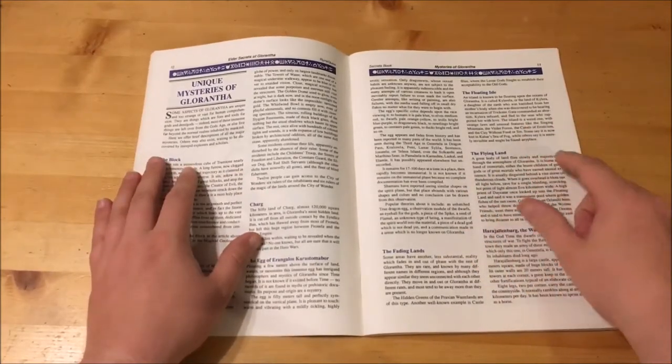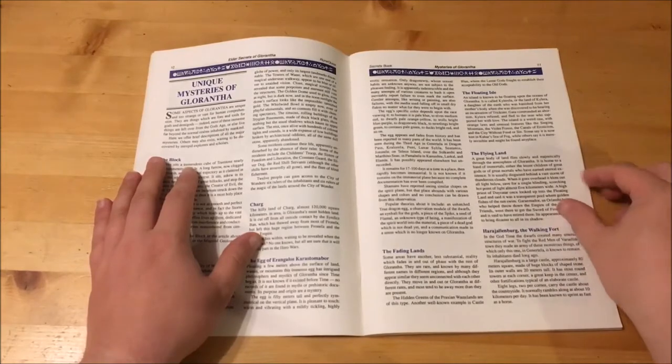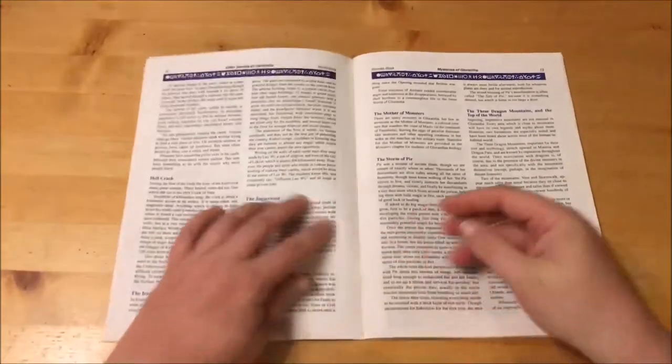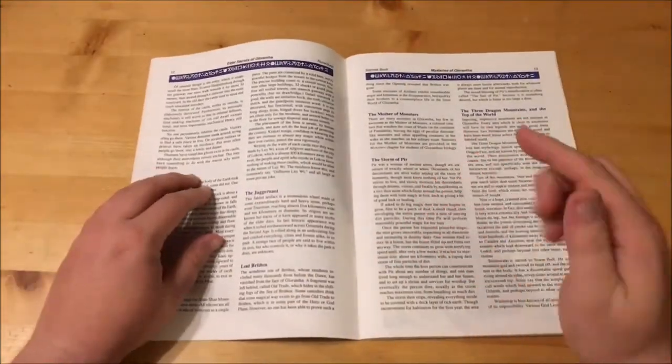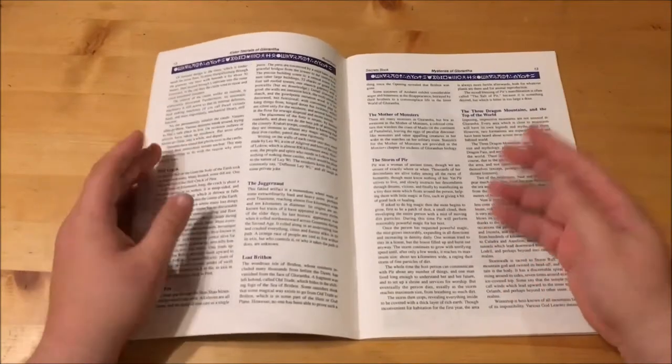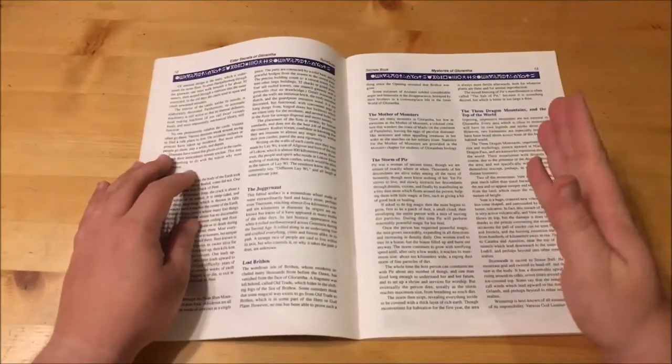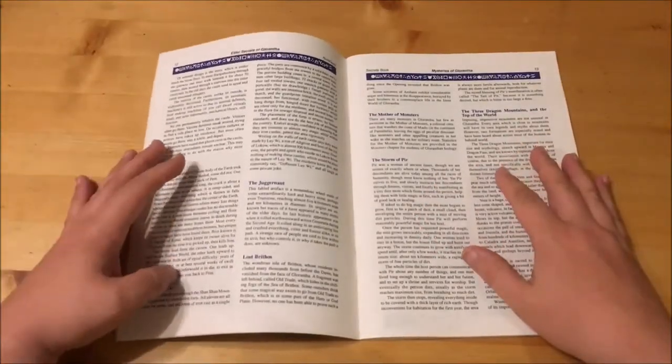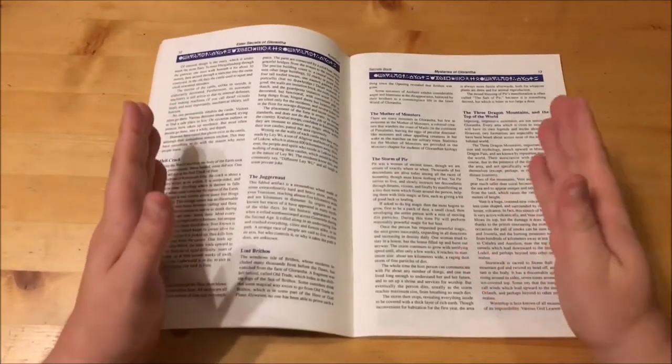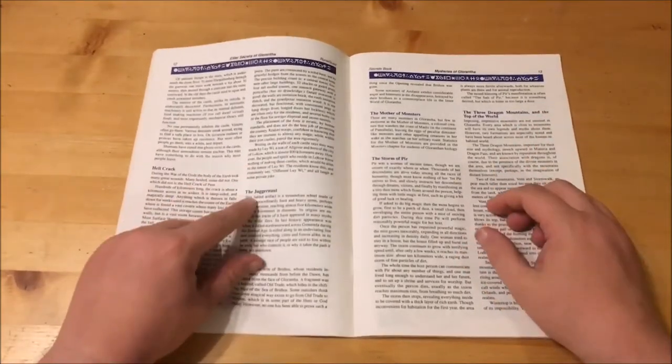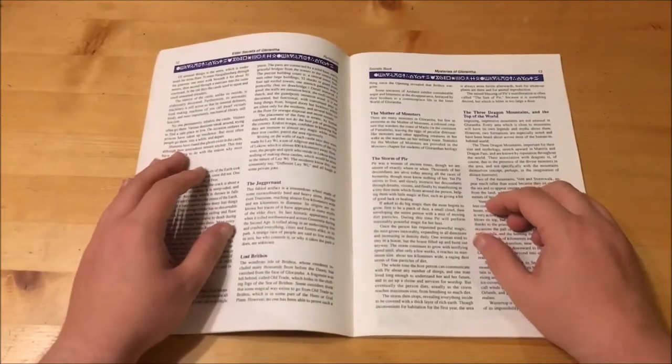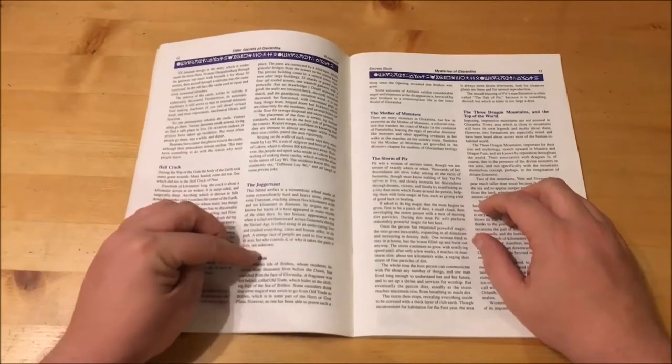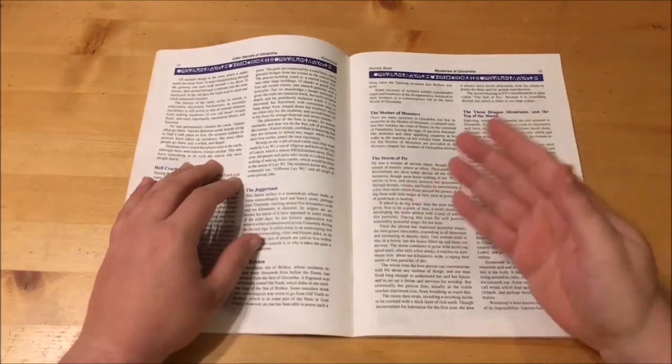We have the Fading Lands next which seem to fade in and out of reality like the Hidden Greens of the Praxian Wastelands and Castle Blue. Following this we have the Floating Isle, a great body of land that flies slowly about Glorantha. When it passes overhead it is said to block out the sun and bring disaster to all in its shadow. Next is Harajallenberg, the Walking Fort. It was built by the ancient dwarfs and is a large stone castle that walks on eight legs about the countryside. We have the Hell Crack, a crack in the earth that is hundreds of kilometers long and about one kilometer wide and is so deep that if anything falls into it, it falls for weeks until it reaches the center of the earth where there is then a passage that leads back to the surface.